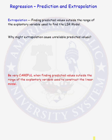What we just observed was an example of extrapolation in our San Francisco example. Extrapolation is finding predicted values outside the range of the explanatory variable used to find the least squared regression model. Let's go back and look at our original data.